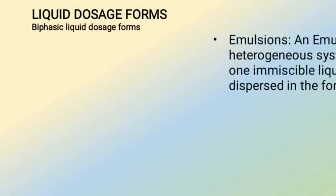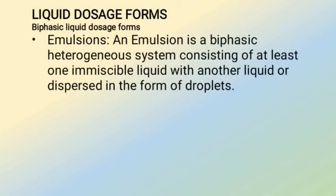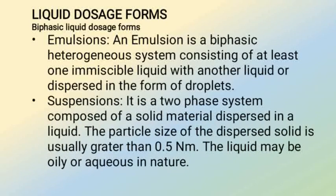Moving to biphasic liquid dosage forms: an emulsion is a biphasic heterogeneous system consisting of at least one immiscible liquid dispersed in the form of droplets in another liquid. A suspension is a two-phase system composed of a solid material dispersed in a liquid; the particle size of the dispersed solid is usually greater than 0.5 micrometers, and the liquid may be oily or aqueous.